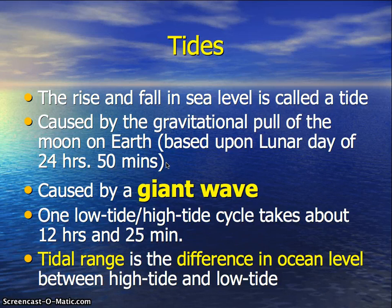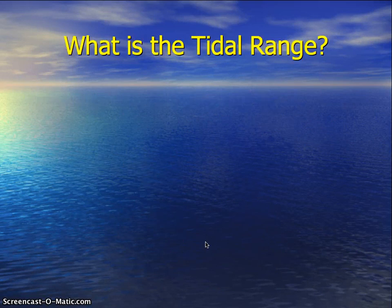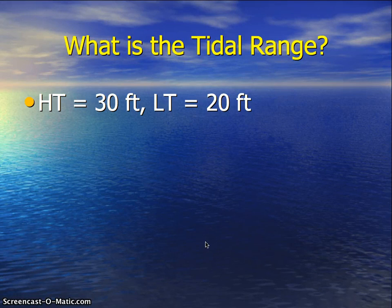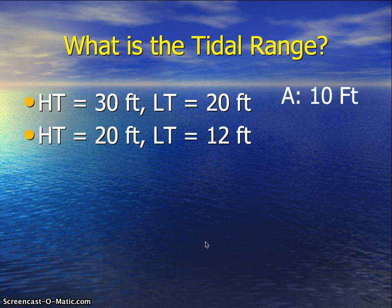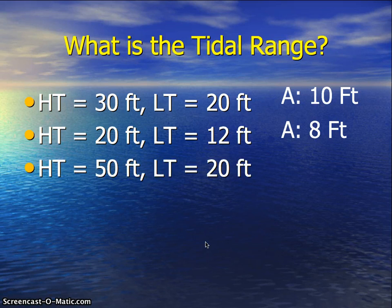There is one low tide and one high tide cycle about every 12 hours and 25 minutes. The tidal range is the difference in ocean level between high tide and low tide. For example, if high tide is at 30 feet and low tide is at 20 feet, your tidal range is 10 feet. If high tide is 20 feet and low tide is 12 feet, the tidal range is 8 feet. And if high tide is 50 feet and low tide is 20 feet, the tidal range is 30 feet.